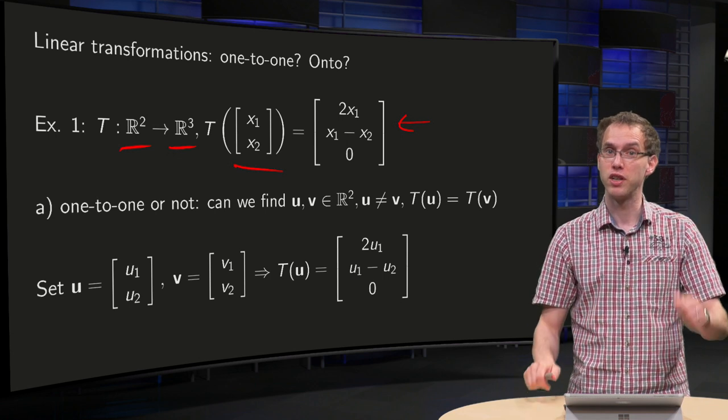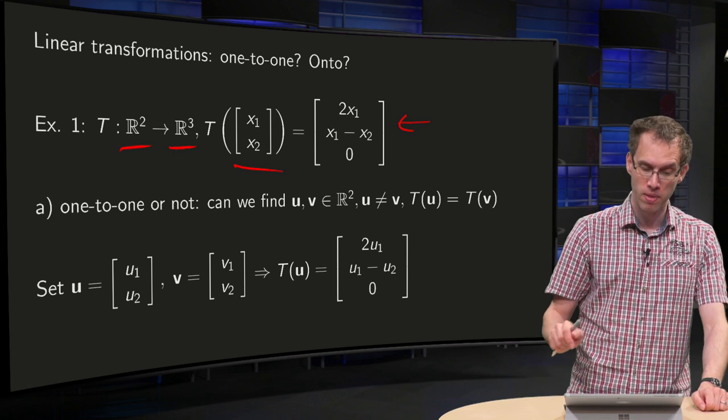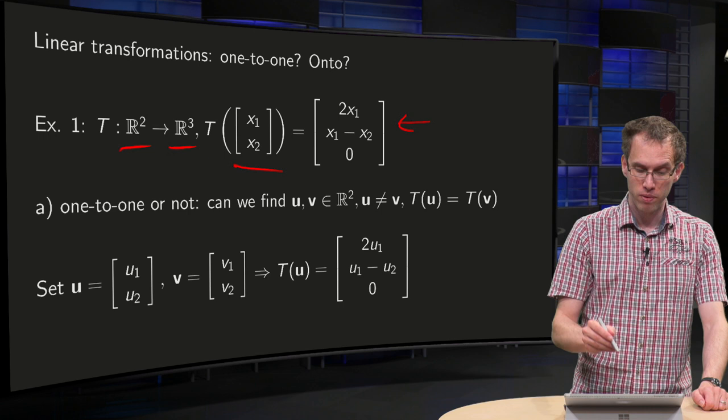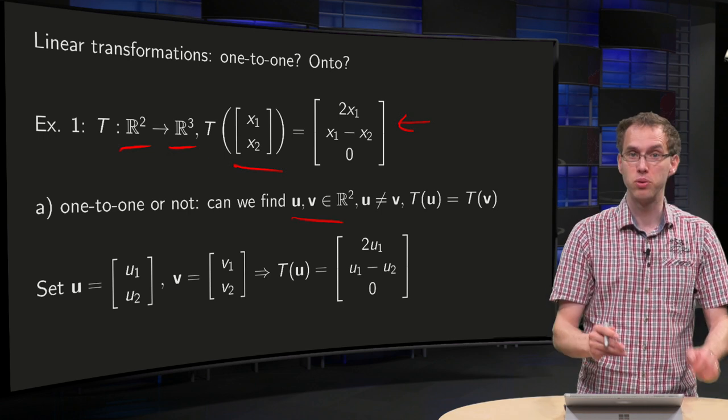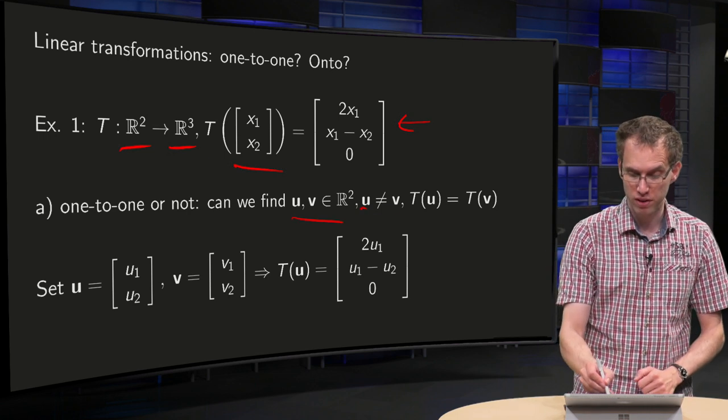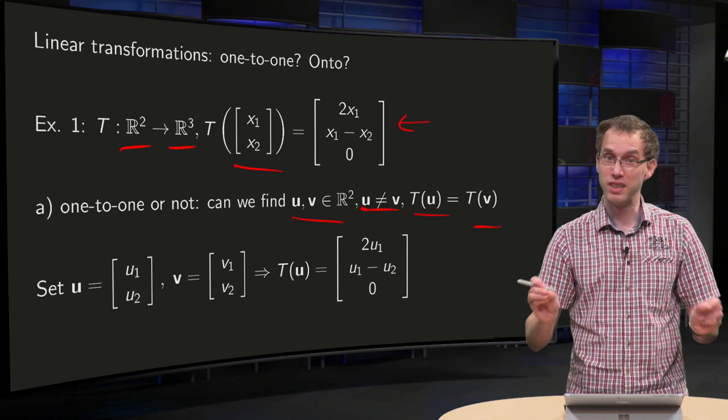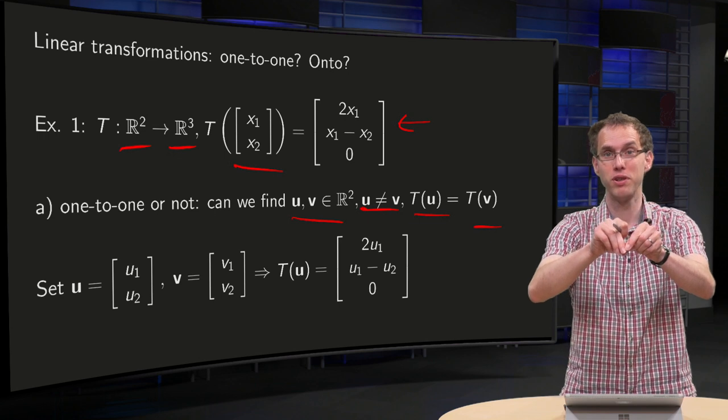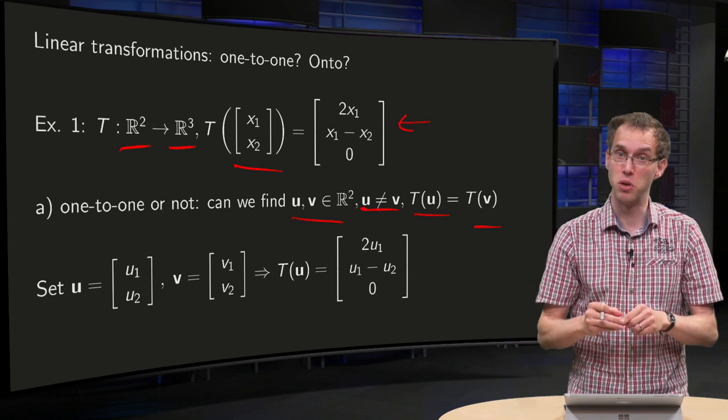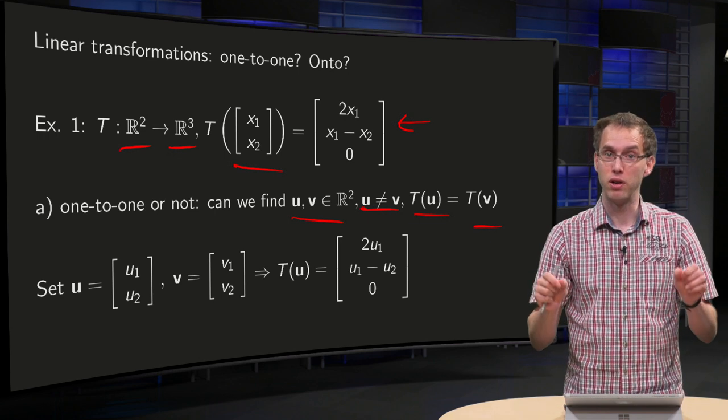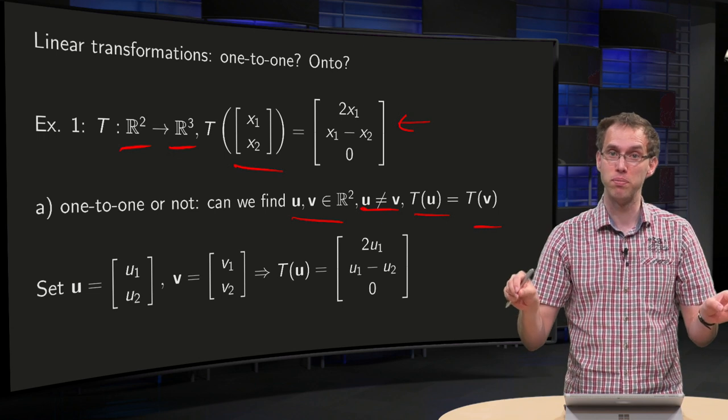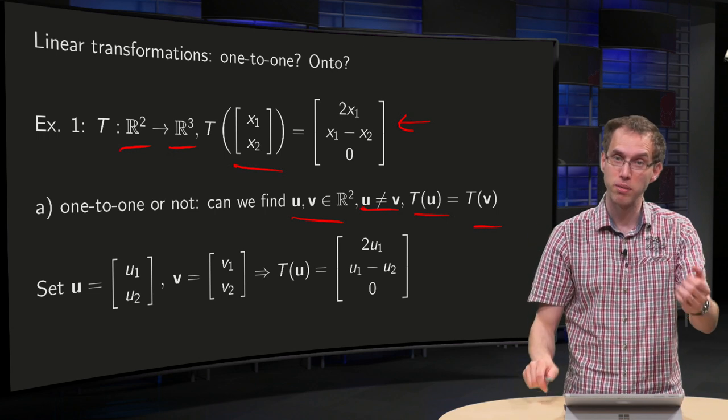First, let's see whether this transformation is one-to-one or not. We will try to find two vectors in R², different vectors such that T(u) equals T(v). If we are able to find different vectors mapping to the same point, then our transformation is not one-to-one. If we are not able to find different vectors mapping to the same point, our transformation is one-to-one.